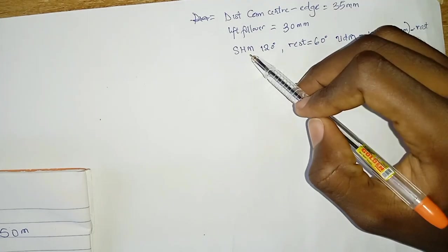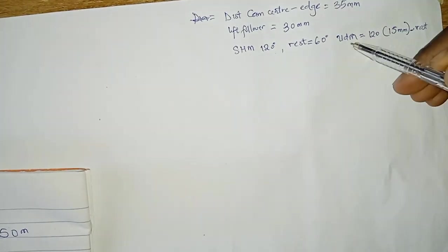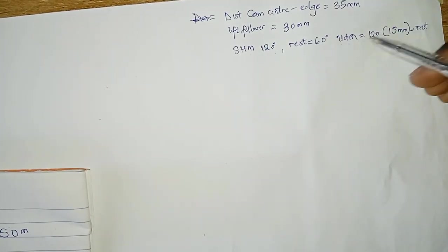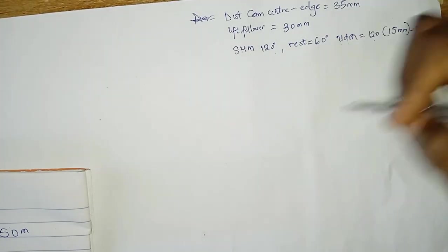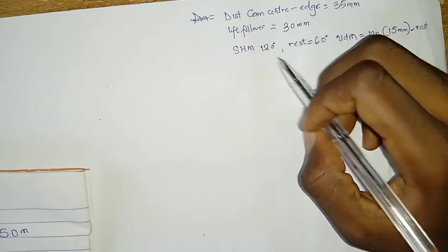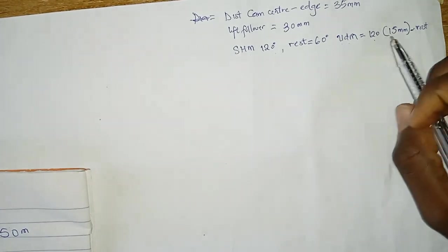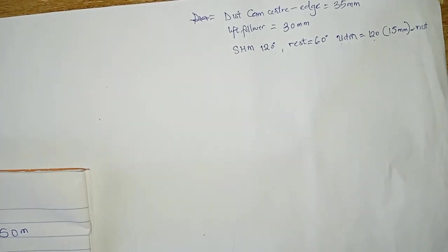Now, simple harmonic motion 120, rest 60, this uniform decelerating motion 120. And I told you the sum of all the angles should be equal to 360. So this is 120 plus 60 plus 120 minus 360 will give you 60. So it will rest at 60 degrees. Now with these parameters, we can draw.